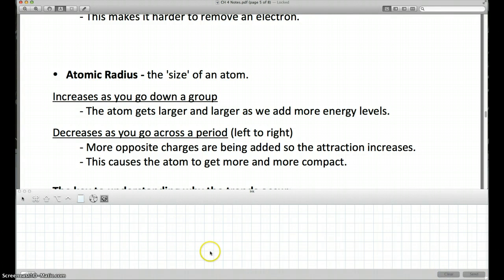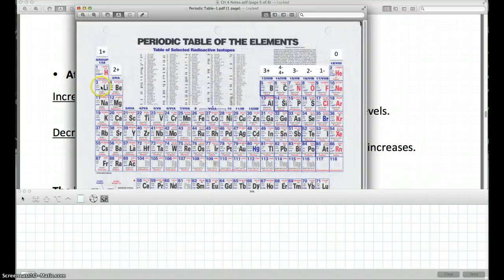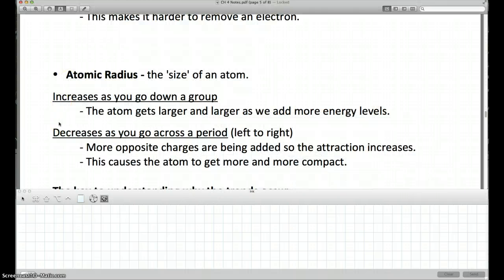Now, if I go across a period, across a row from left to right, let's say I'm going from lithium to fluorine again. So lithium to fluorine. If I draw those pictures again, lithium has two rings, just like I said before. And in that atom, there are three protons and three electrons. Those three electrons, there's two of them on this ring, and then there's one of them on the outer ring.